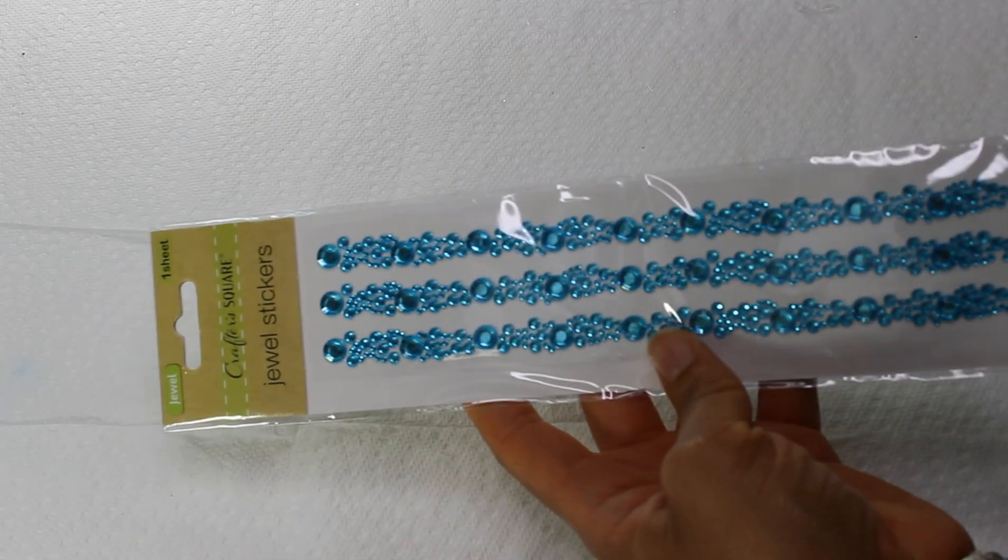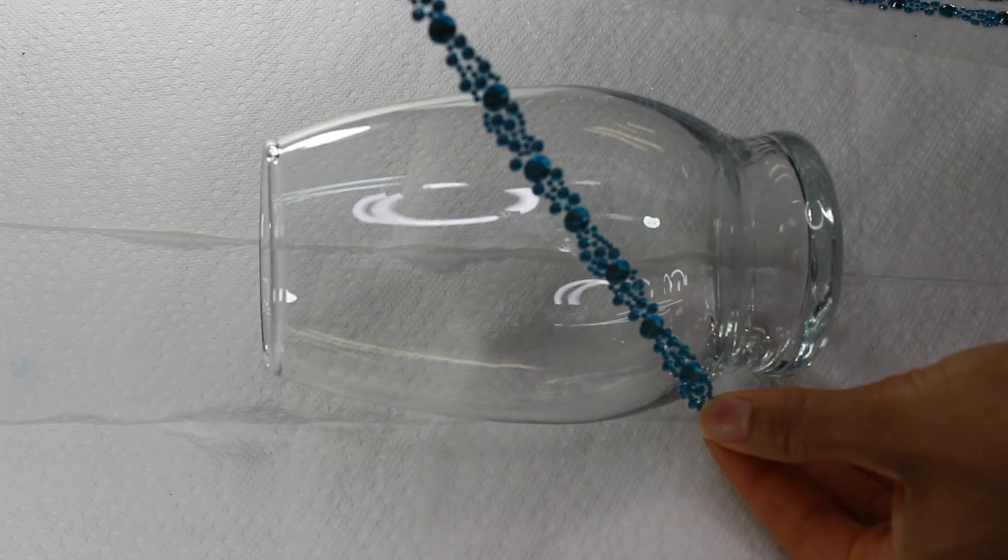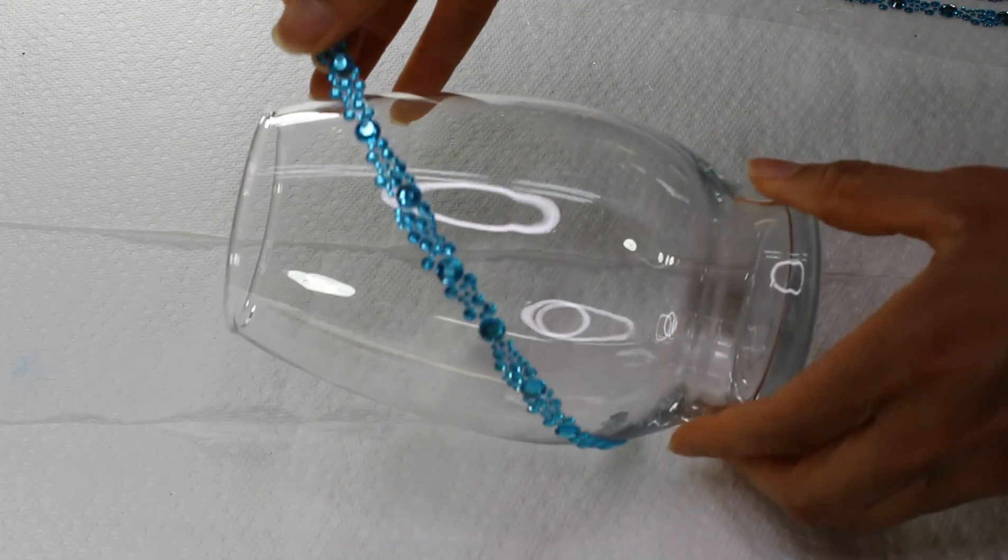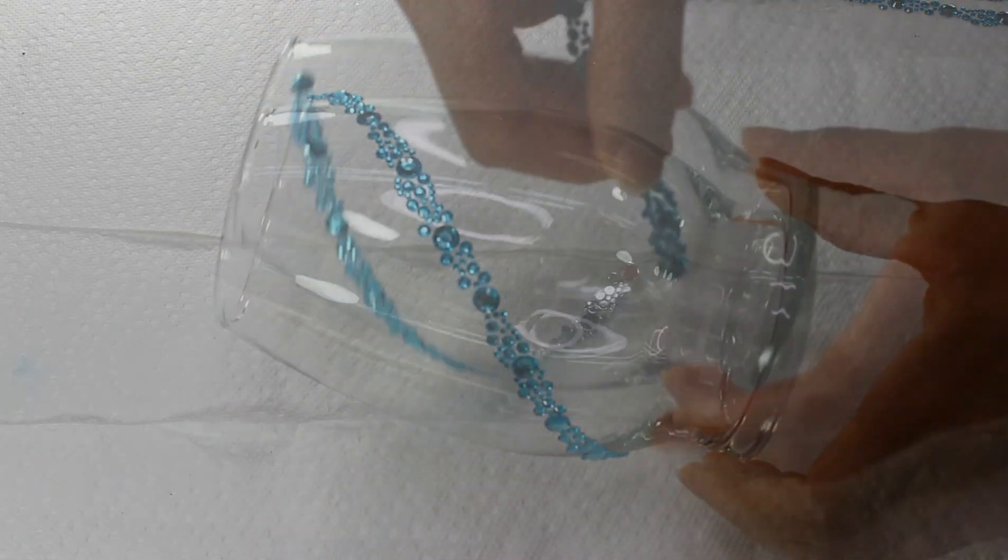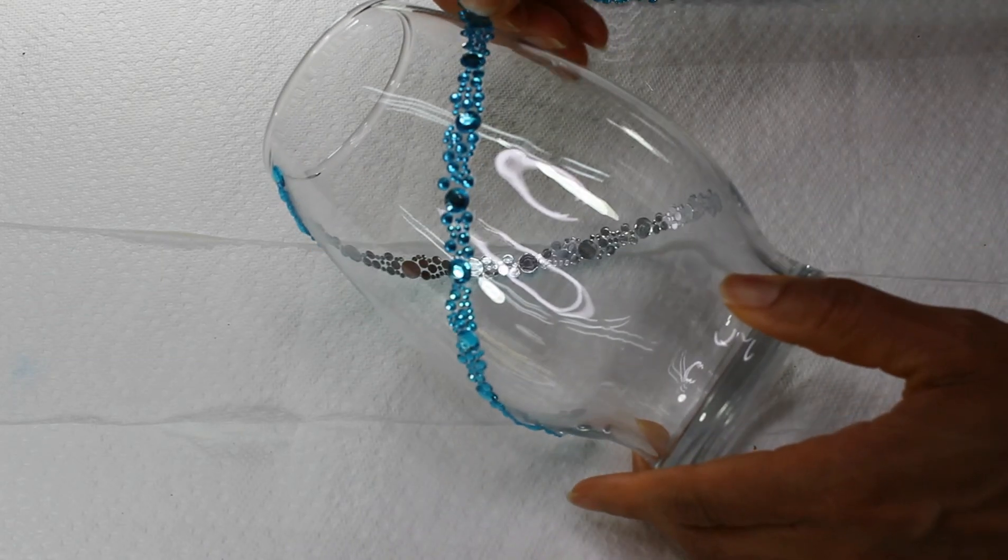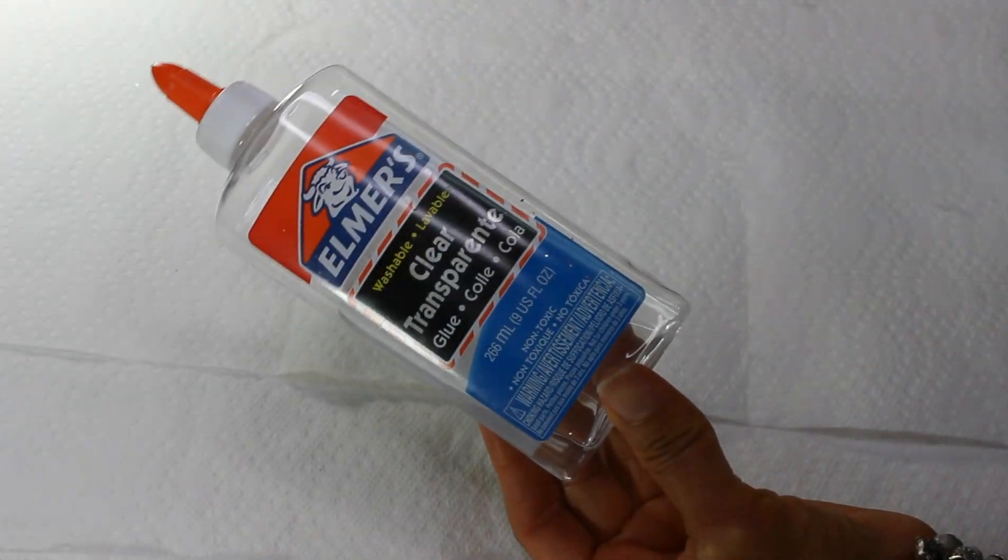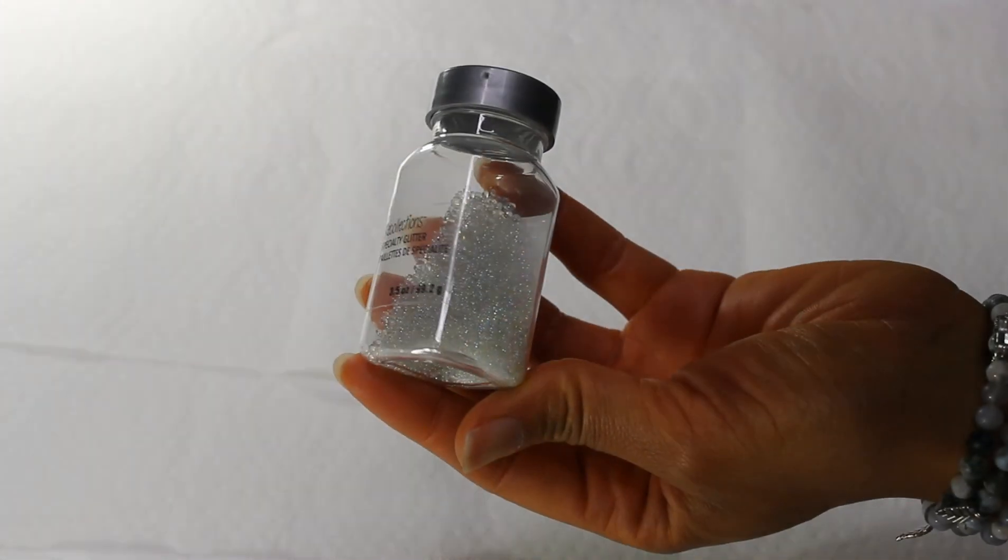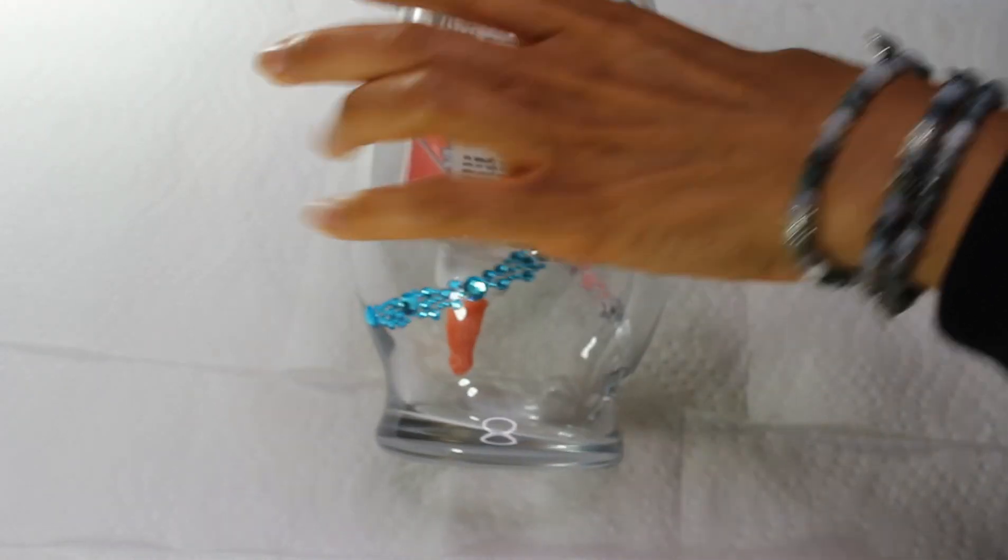For my next DIY, I'm going to be using these blue Dollar Tree bling and I'm just going to use one of these Dollar Tree vases. Again, I'm going to be using this Elmer's glue as well as this pearl specialty glitter from my local craft store.